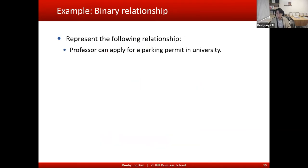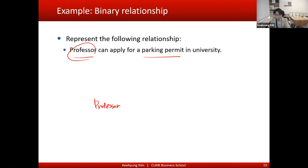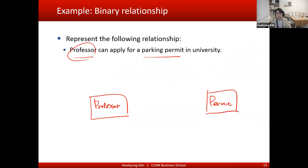Let me give another example — this time a binary relationship. Consider this case: a professor can apply for a parking permit at the university. The professor may have a car and want to apply for a parking permit. Here there are two pieces of information we want to store in our database system: professor information, so professor can be one entity, and another entity can be permit.